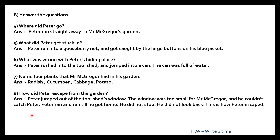Peter jumped out of the tool shed's window. The window was too small for Mr. McGregor and he could not catch Peter. Peter ran and ran till he got home. He did not stop. He did not look back. This is how Peter escaped.